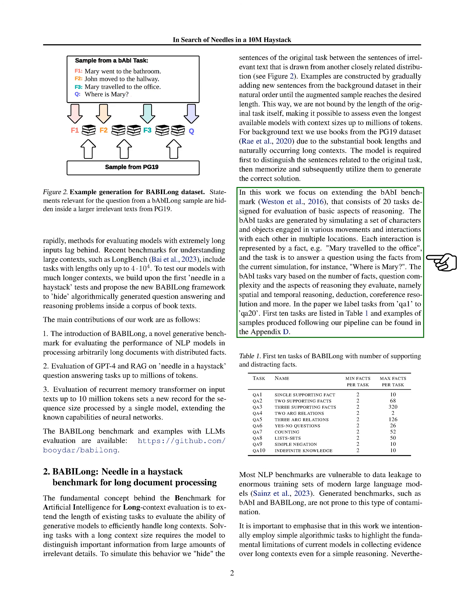We focus on extending the Bobby benchmark, which consists of 20 tasks designed to evaluate basic reasoning aspects. These tasks simulate interactions among characters and objects in various settings, with each interaction represented by a fact. The challenge is to answer questions based on these facts, testing the model's reasoning capabilities across different dimensions.